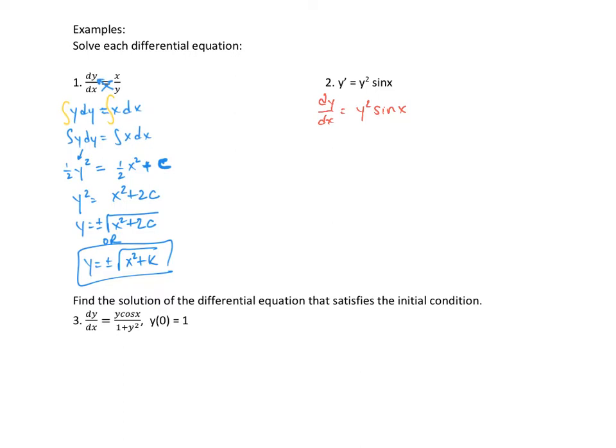And we get y squared sine x. And the reason I did that is because I want to be able to separate the dy and the dx so I can integrate this. I want to put all the y's on one side, all the x's on the other side. So over here, I get dy over y squared equals sine x dx.